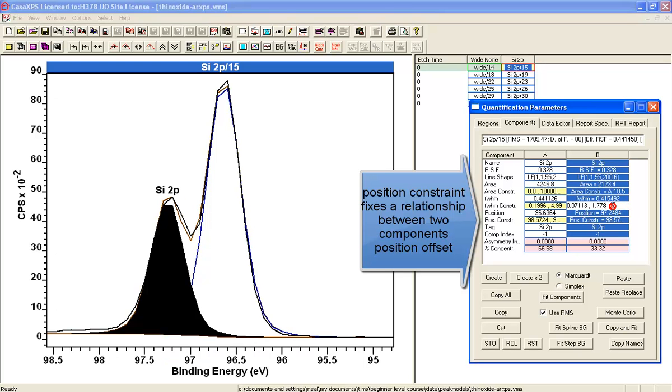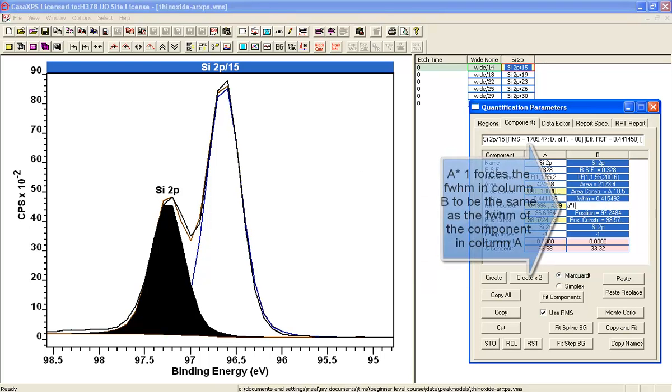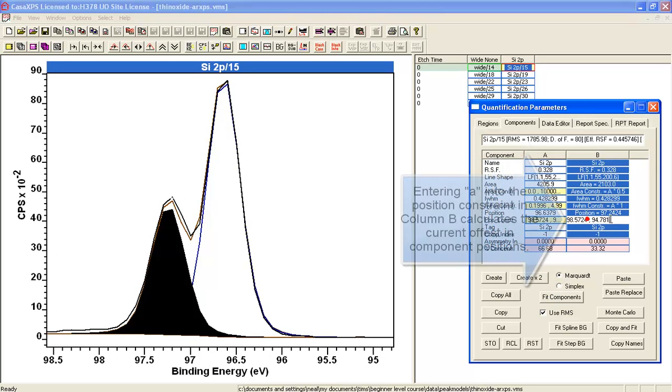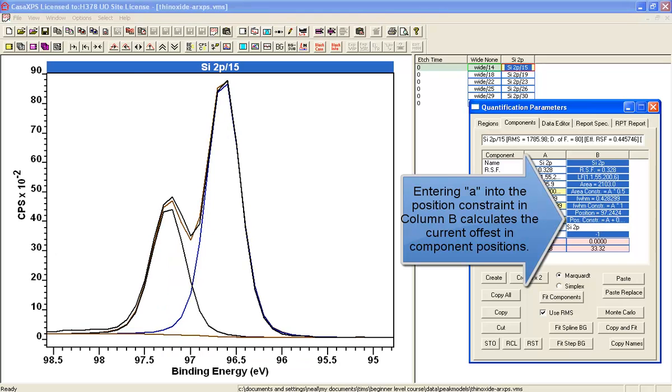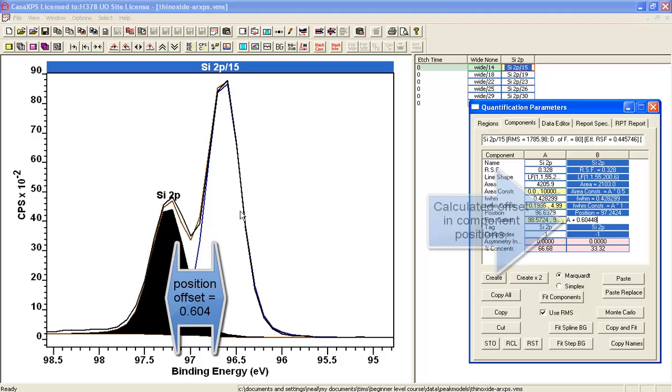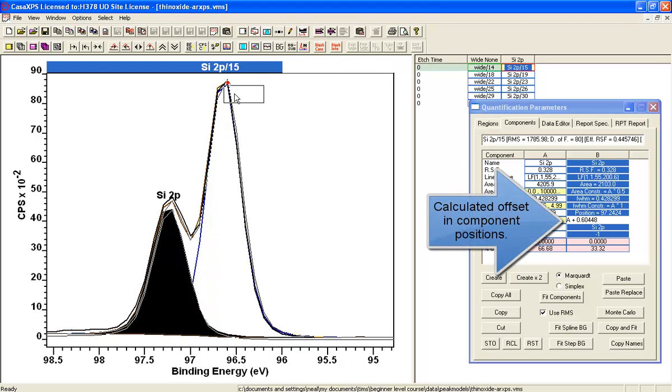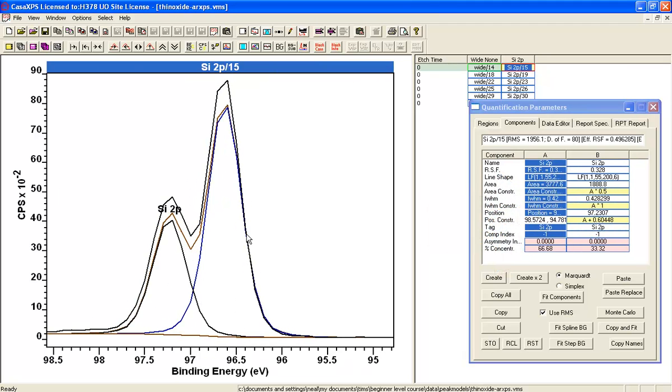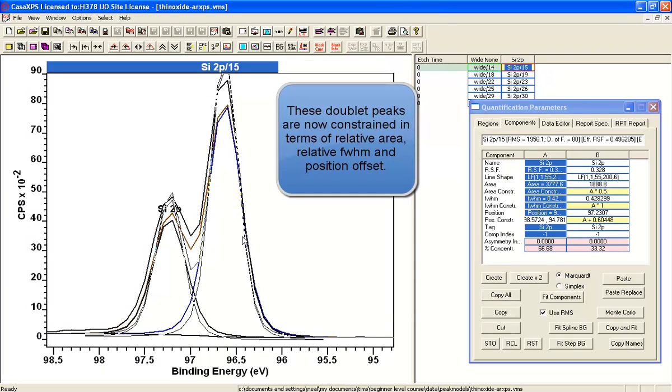Similarly, I could say that I need to have the full width at half maximum need to be roughly the same, so I will fit on the basis of that. And having done it, let's assess the displacement between these two peaks, and I'll accept that that is a plausible offset. So we've now got a pair of peaks that are completely constrained in terms of area, and the full width at half maximum adjusts together, and the position adjusts together.